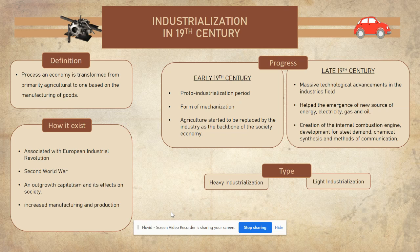The end of the 19th century saw massive advancement in the industrial field, with the emergence of new energy sources such as electricity, gas, and oil. There are two types of industrialization: heavy industrialization and light industrialization. Heavy industrialization involves the production of modern machinery and equipment that require high skills and capital. Meanwhile, light industrialization involves the processing of agricultural products, mining, logging, and fisheries.